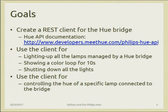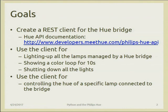We want to show a color loop — automatically changing the color of the lamp for 10 seconds — and then turn off the lamp. So the steps are: first, create a REST client; second, use the client to turn on the lamp, show a color loop from green to red and back for 10 seconds, then turn off. If time allows, I'll put on GitHub a more advanced client for controlling the hue of a specific lamp connected to the bridge.